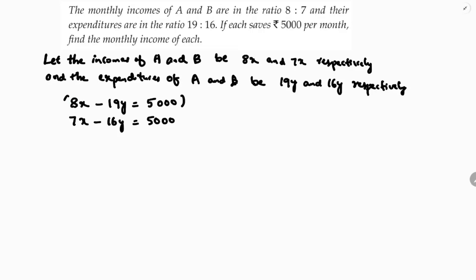So now I need to solve these both equations. What I'll do is first equation I'll multiply with 7, second equation I'll multiply with 8, because 7×8=56 and 8×7=56. So first equation, if I multiply with 7, see 7×8=56.